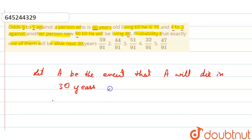And B be the event that B will die in 30 years.